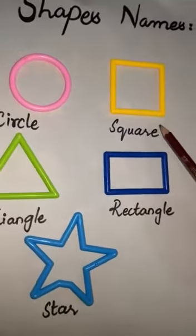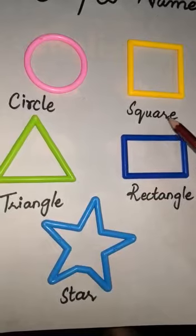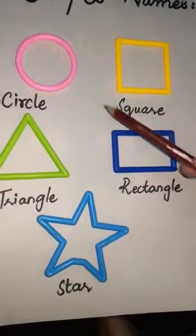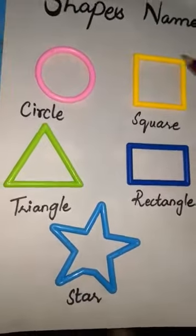This is a square. S Q U A R E. Square. It has four sides. Its all sides are equal.